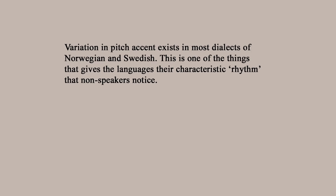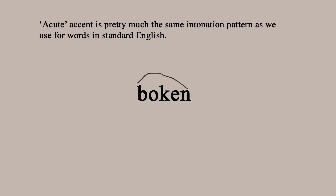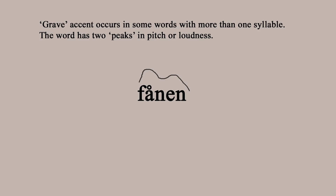To use standard Swedish as an example, you have what's called the acute accent and the grave accent. The acute accent is pretty much the same as a normal English stress pattern in a native word — 'bokjen'. The grave pattern is different: it only occurs in words with more than one syllable, and it has two peaks, two points of higher pitch — 'fornen'. It works differently depending on where you are; in some dialects the pitch contour might be different, so instead of 'fornen' it might be 'fornen', but it only applies to specific words. I've heard many learners complain that courses often don't teach pitch accent very well, although I'm sure some do.